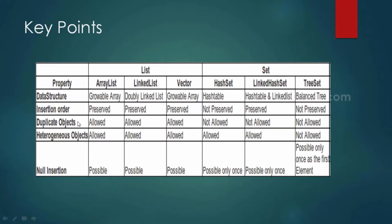Duplicate objects are allowed for List implementation classes but are not allowed for Set implementation classes. Similarly, heterogeneous objects are allowed for List, HashSet, and LinkedHashSet, but are not allowed for TreeSet. This is because TreeSet always inserts elements based on sorting — in ascending or descending order. When inserting heterogeneous objects like a String and an Integer, they cannot be compared, so TreeSet does not allow them.